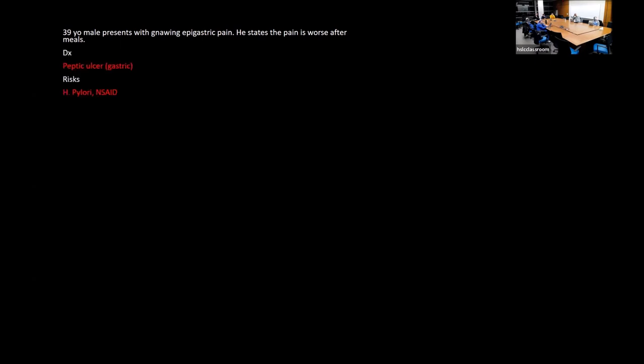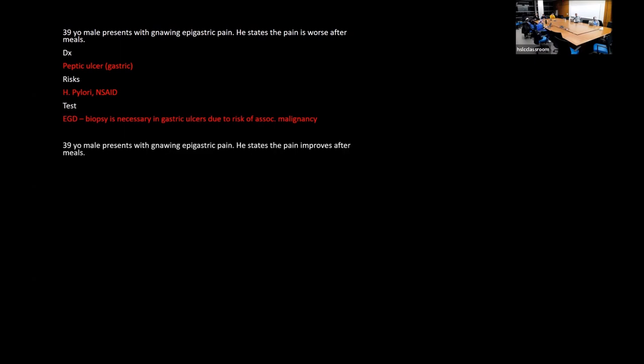A 39-year-old with gnawing epigastric pain worse after meals — think gastric ulcer (peptic ulcer disease). Risk factors: H. pylori and NSAIDs. EGD and biopsy are more necessary for gastric ulcers due to higher risk of malignancy. If pain improves after meals, think duodenal ulcer — more often associated with H. pylori but lower malignancy risk.